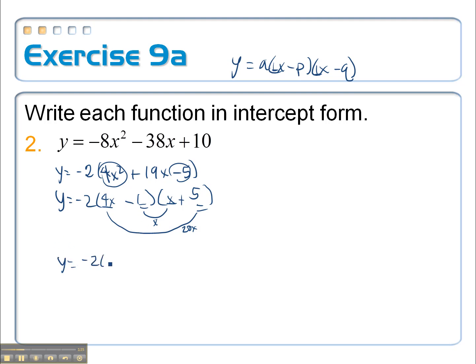So y equals negative 2 times 4x minus 1 times x plus 5. All right, so on this first one I can't have that 4 in there, so I'm going to have to factor it out front and when I do I'm going to multiply it times that negative 2.